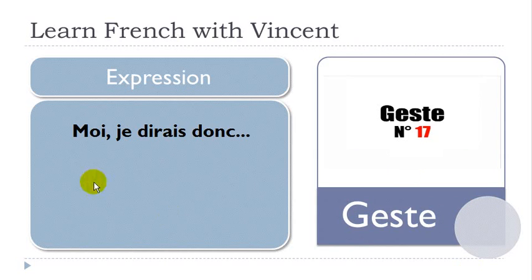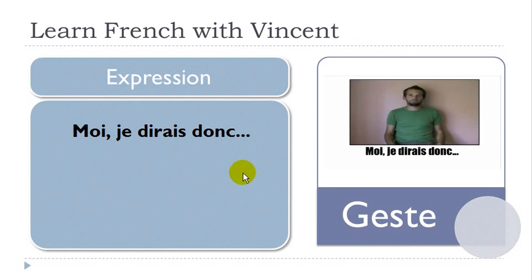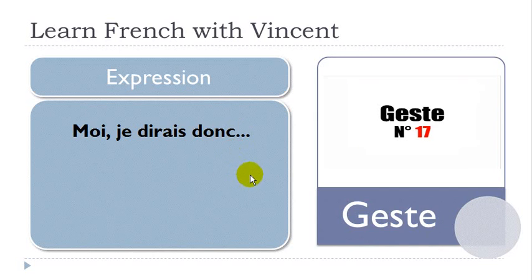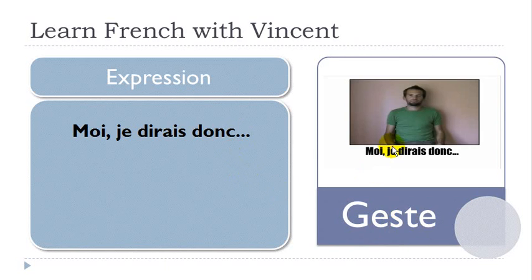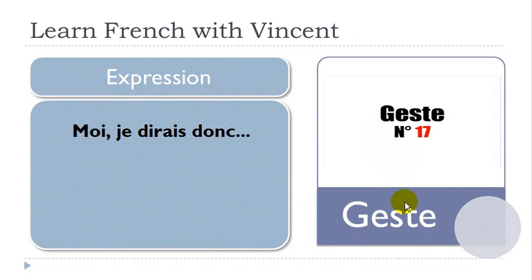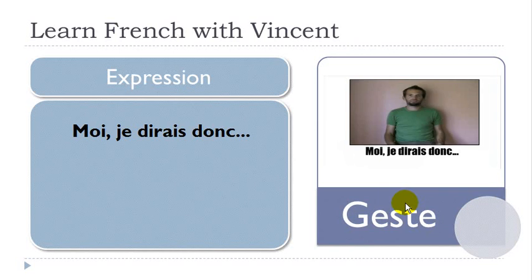Second gesture now: 'Moi je dirais donc.' So you're discussing with someone and you would like to say something, add something, express yourself — so you can make this gesture. You can see that Laurent is doing that mostly with his arm.